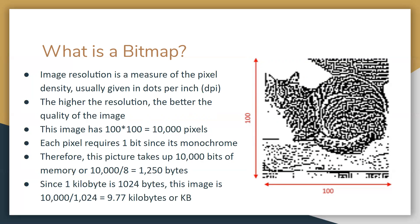Each pixel is either black or white, so we need only one bit to represent this information, because a bit is either a zero or a one. When it comes to monochrome pictures, you only use black and white. Grayscale is an 8-bit type of thing, but we'll talk about that another time. Each pixel requires one bit since it's monochrome, so this picture takes up about 10,000 bits of memory, which is the same as 1,250 bytes.